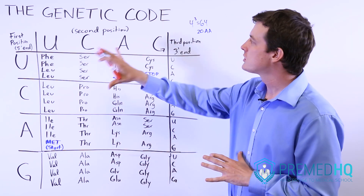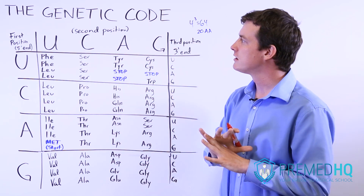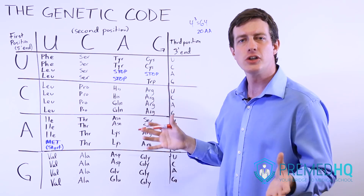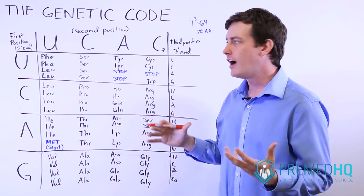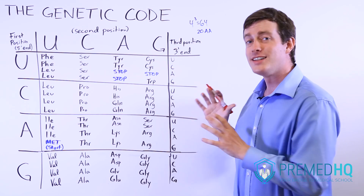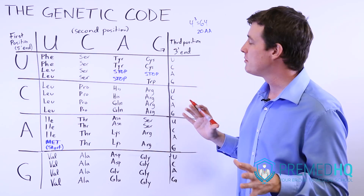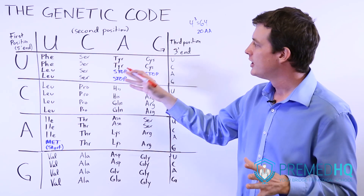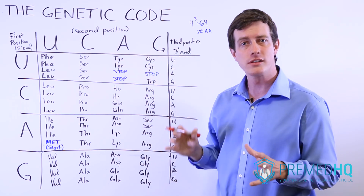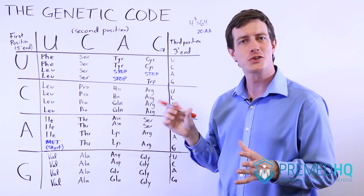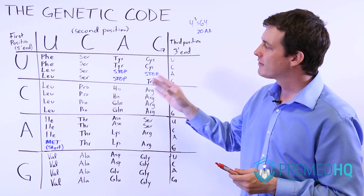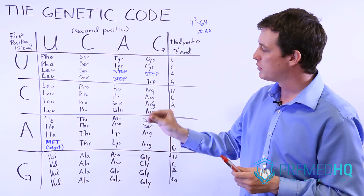This genetic code is something that has been conserved throughout much of evolution, and nearly all species share this universal genetic code. For the MCAT, you will not be responsible for memorizing all of the different codons and what they represent. You'll have to be able to work with codons and what happens when there are errors in replication or when a mutation occurs, and you'll need to recognize a few very important codons.